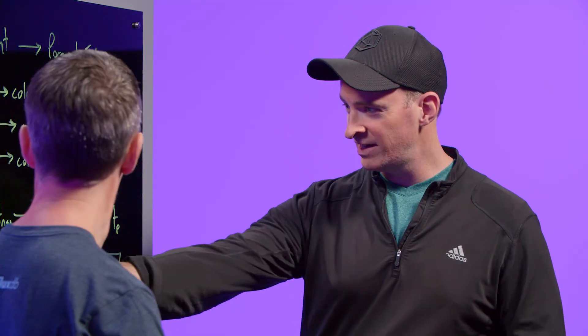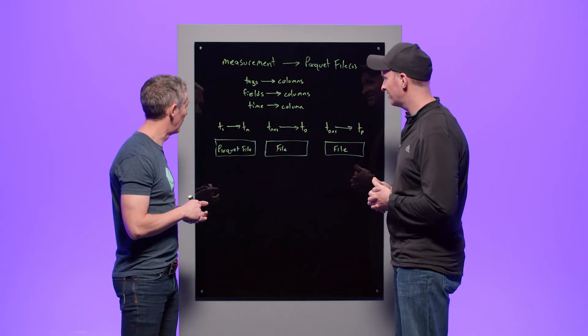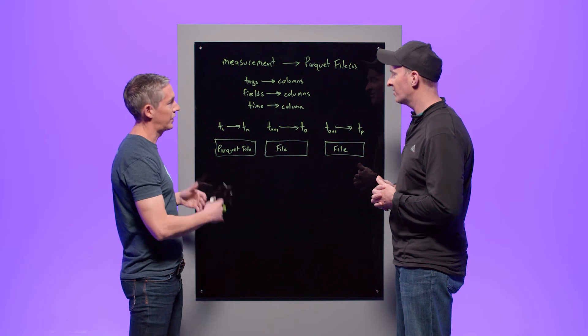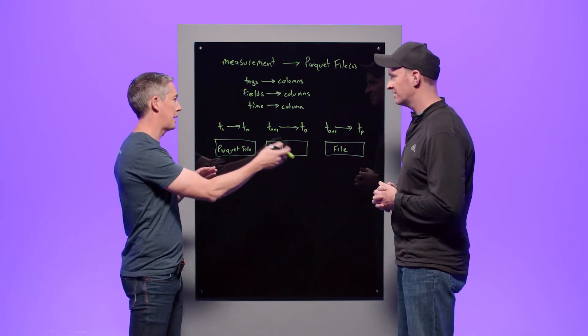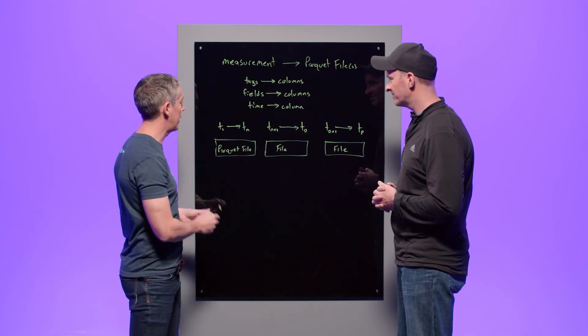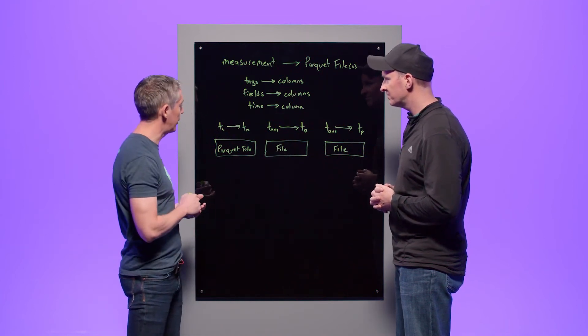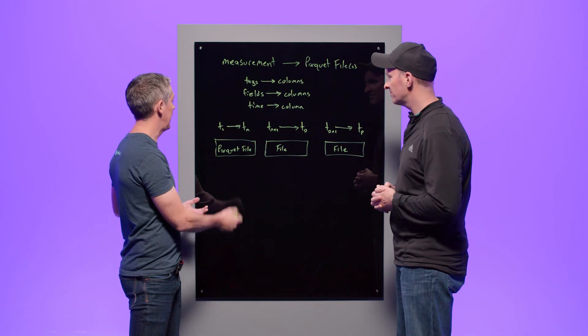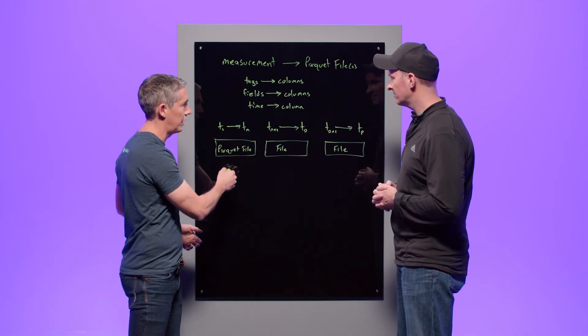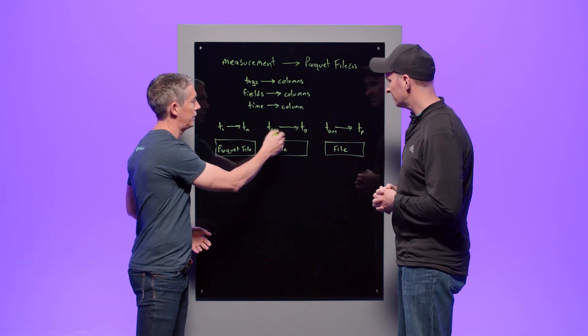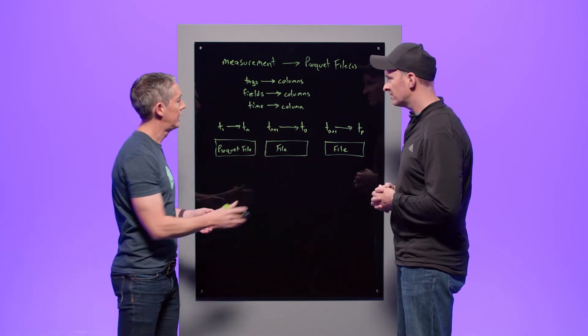That's great. What's going on down here with these different files? Well, that's the last bit. So to optimize for query performance, we make sure that we organize the data in non-overlapping time ranges. So we have here three example Parquet files all for the same measurement. And we have time t of 1 to t of n in this one file, and time t of n plus 1 to t of 0 in this other file, and so on.